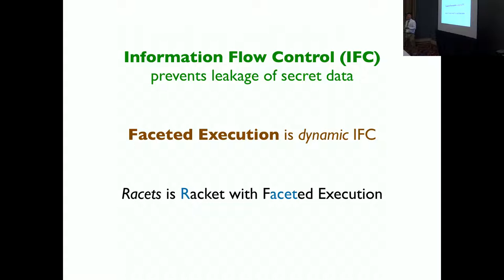One is static. One of the examples using static information flow control is a type system. Another one is dynamic, which we use to enhance the dynamic information flow control, which is Faceted Execution. And RACIS is Racket with Faceted Execution.